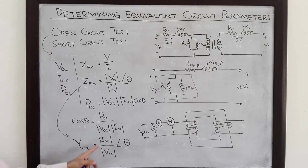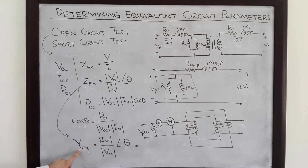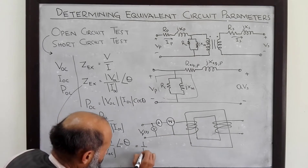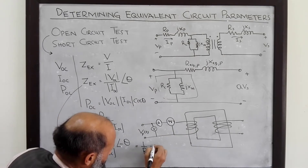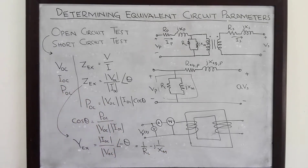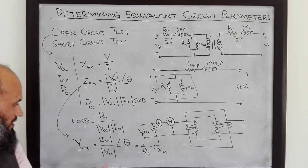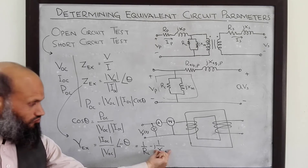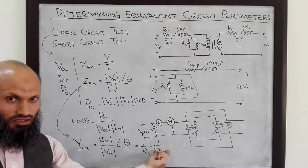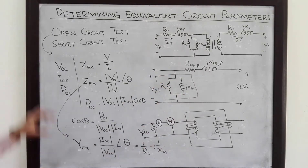Once Y_excitation is calculated, the admittance of the excitation branch is 1/RC minus j·(1/XM). This is a complex number whose real part equals 1/RC and whose imaginary part equals minus 1/XM. This is how we determine the parameters of the excitation branch — we perform the open circuit test for that purpose.